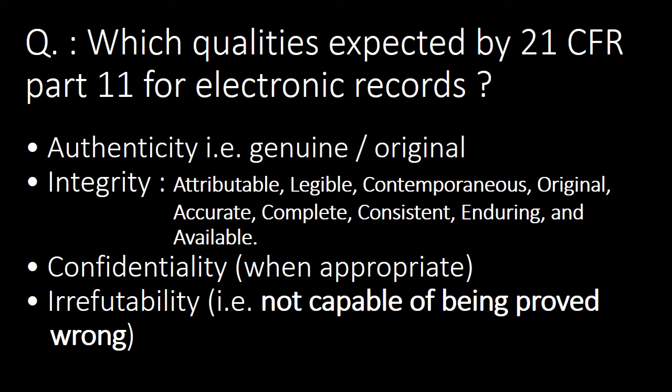Next important question: which quality is expected by 21 CFR Part 11 for electronic records? There are four qualities expected: first, authenticity — that electronic records are genuine and original; second, integrity — that electronic records are attributable, legible, contemporaneous, original, accurate, complete, consistent, enduring, and available; third, confidentiality; and fourth, irrefutability — that is, not capable of being proved wrong.